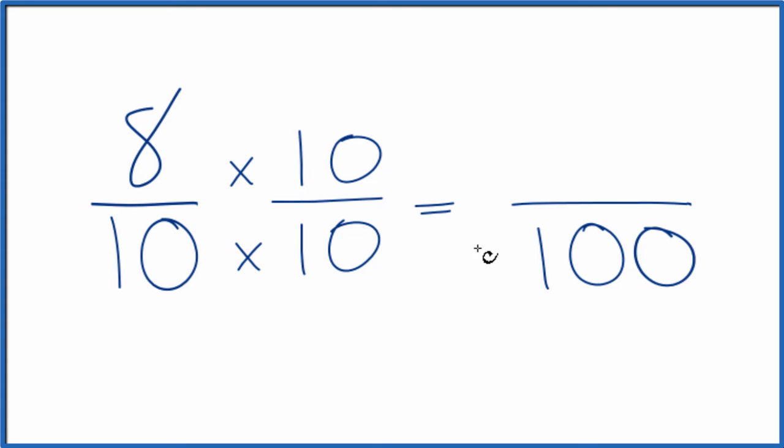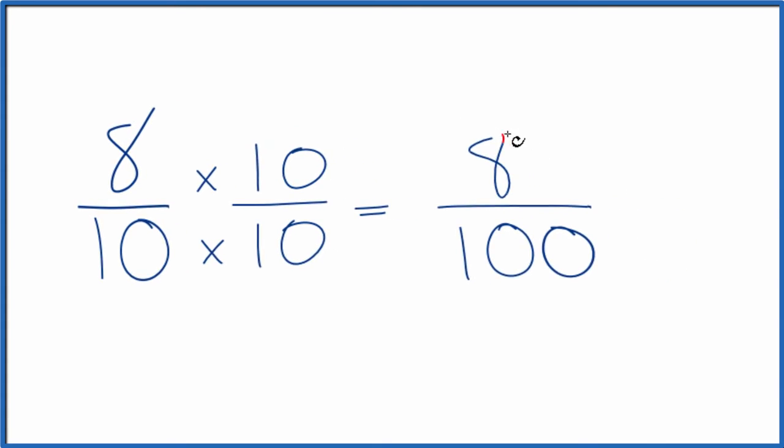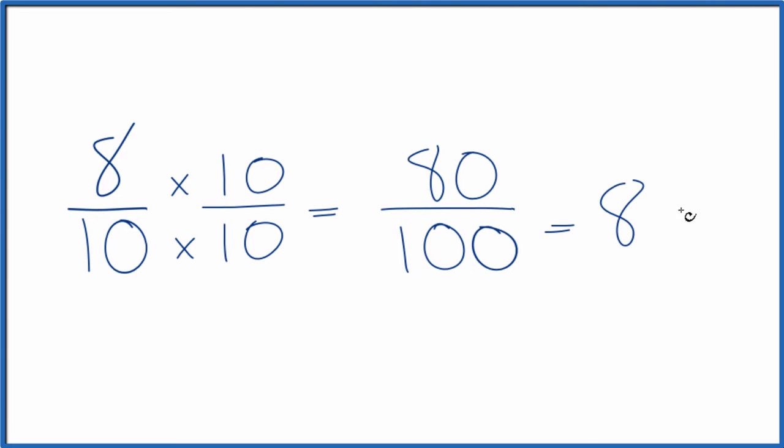We don't change the value, just the way it's represented. 8 times 10 is 80, and that means we have 80 percent. So that's the first way.